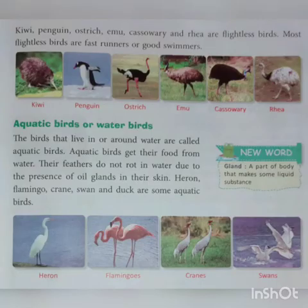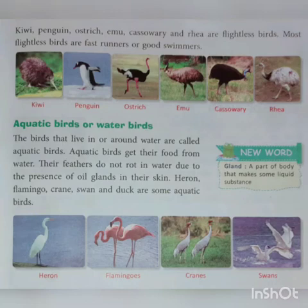They are heavy and have more feathers on their body. Kiwi, penguin, ostrich, emu, cassowary and rhea are flightless birds. Most flightless birds are fast runners or good swimmers.